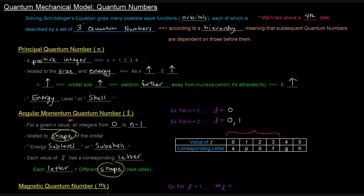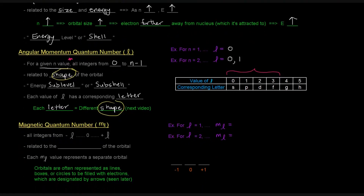The third quantum number is the magnetic quantum number, m sub l, which is dependent on l. Its possible values are all the integers from negative l through 0 to positive l. So for l equals 1, the m sub l values are negative 1, 0, and positive 1. For l equals 2, the values would be negative 2, negative 1, 0, positive 1, and positive 2.